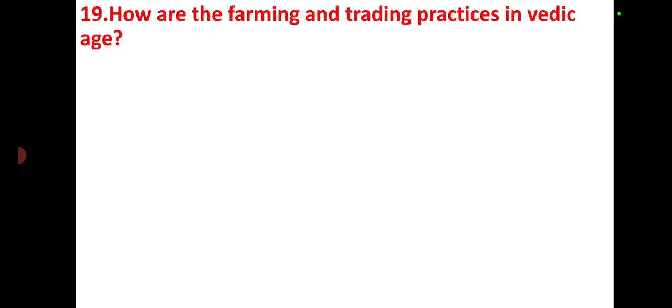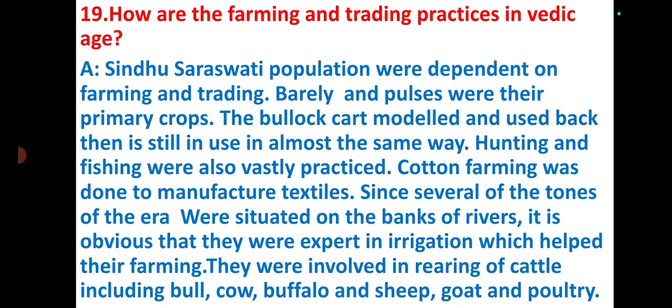The last question: how were the farming and trading practices in the Vedic age? The Sindhu-Saraswati population were dependent on farming and trading. Barley and pulses were their primary crops. The plough used back then is still in use in almost the same way. Hunting and fishing were also vastly practiced. Cotton farming was done to manufacture textiles. Since several towns were situated on river banks, they were expert in irrigation. They also reared cattle including bulls, cows, buffalo, sheep, goat, and poultry.